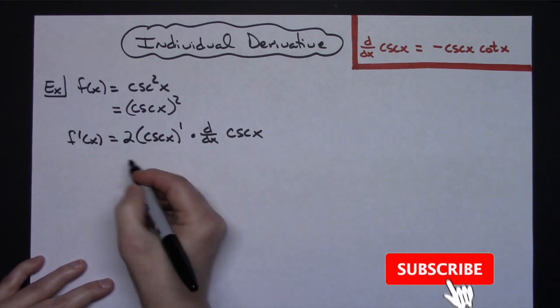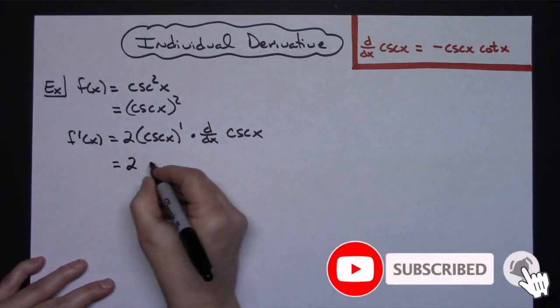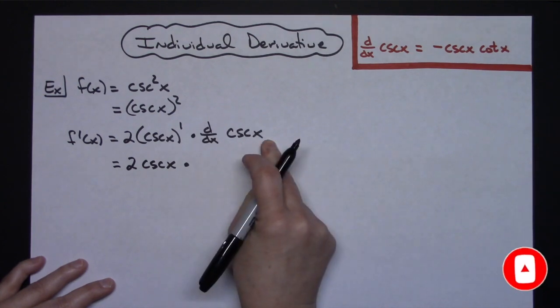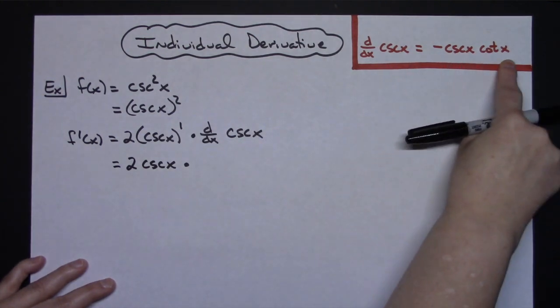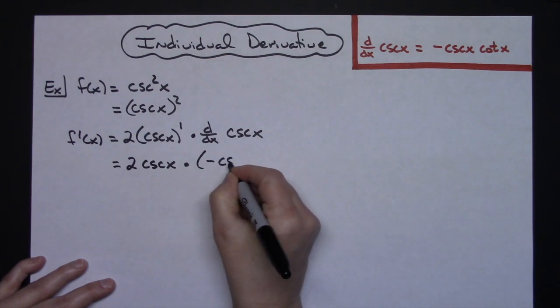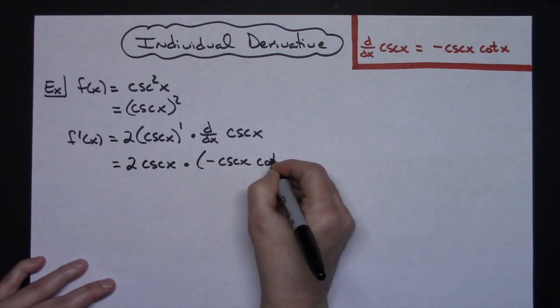Everything up to this point stays the same. So I have 2 cosecant x right there. Now I take the derivative of this cosecant, which you have memorized hopefully. So I'll have negative cosecant x cotangent x.